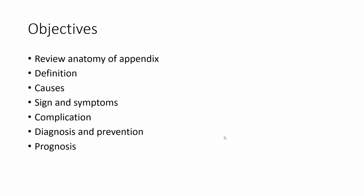The objectives: First, I am going to review the anatomy of the appendix. Second, definition, and then causes, and then signs and symptoms, and then complications, and then diagnosis and prevention, and then prognosis.